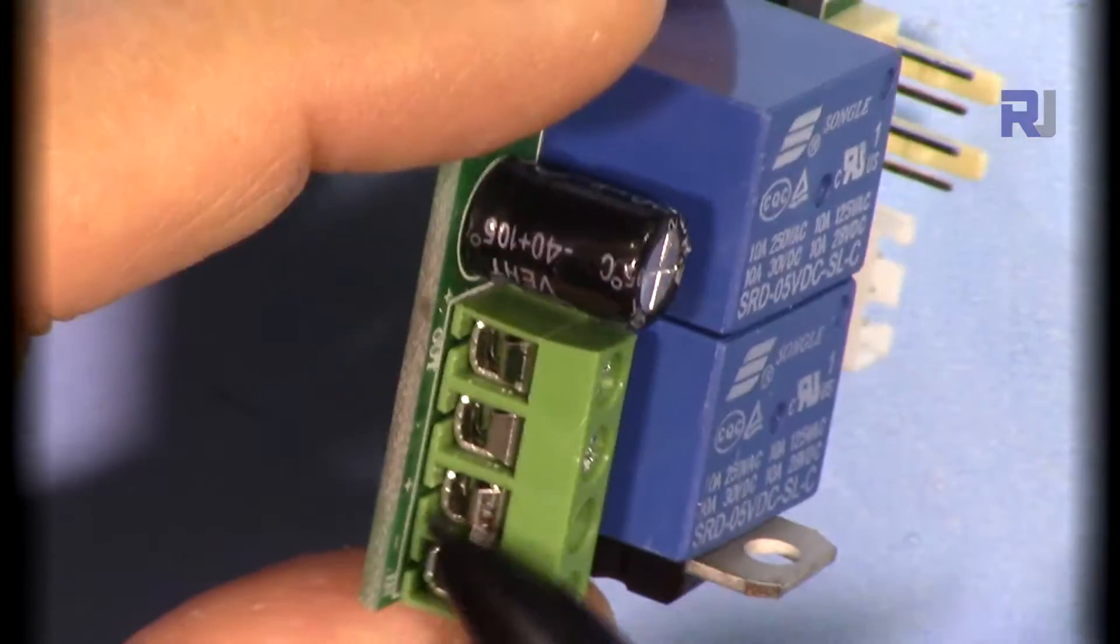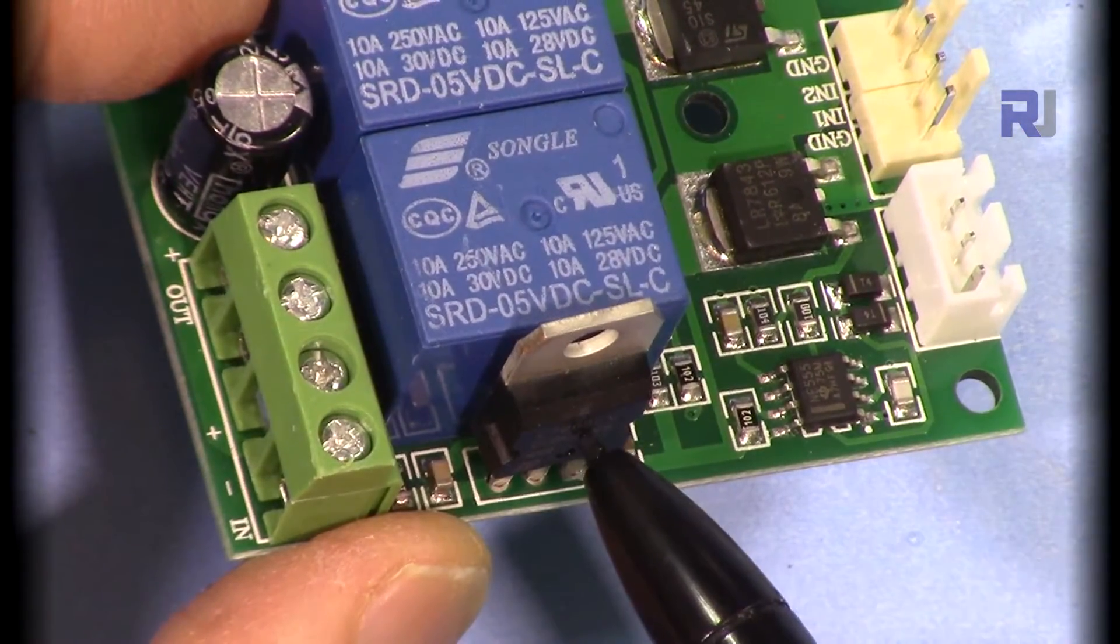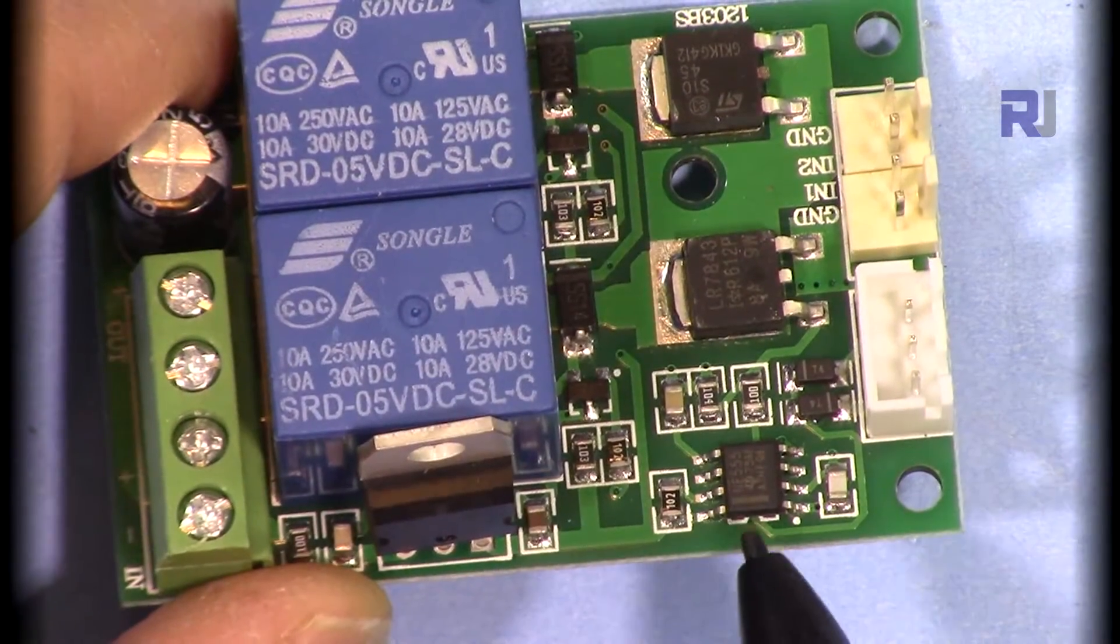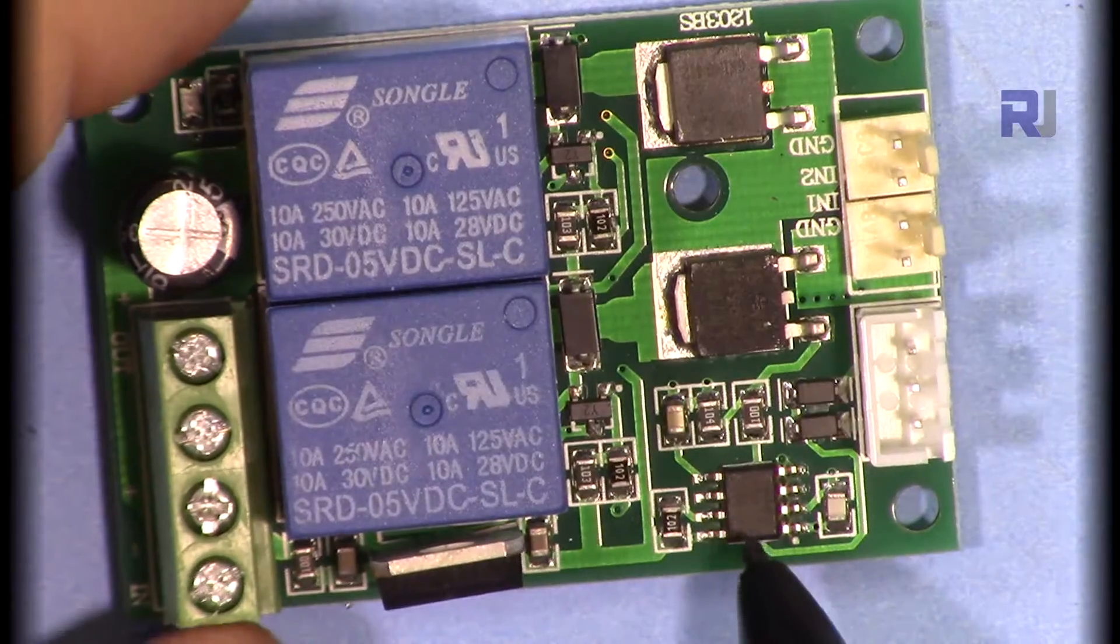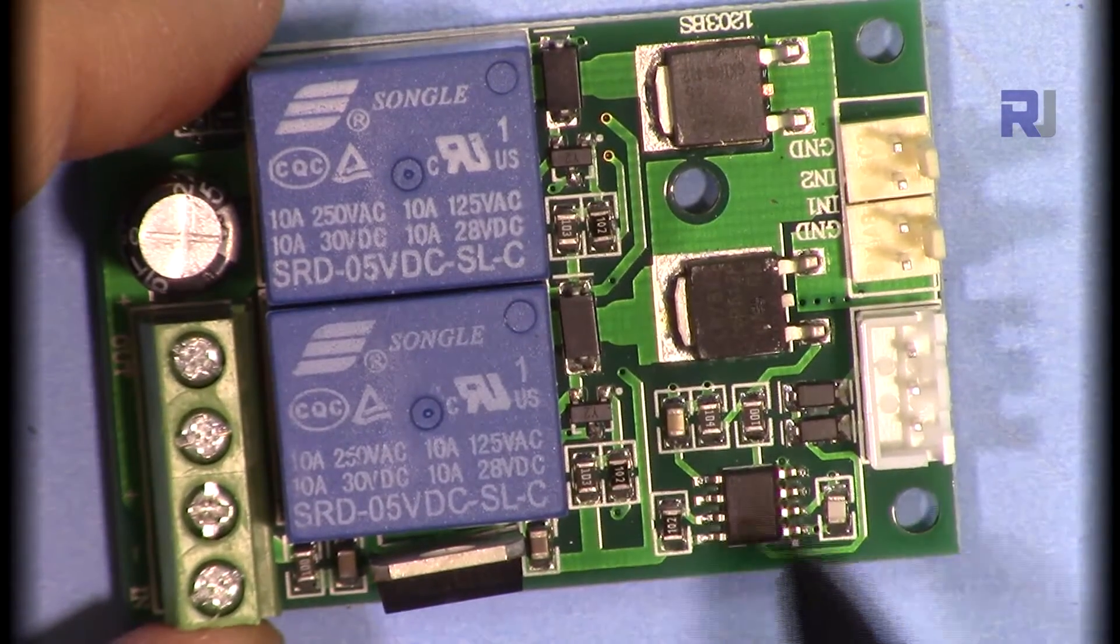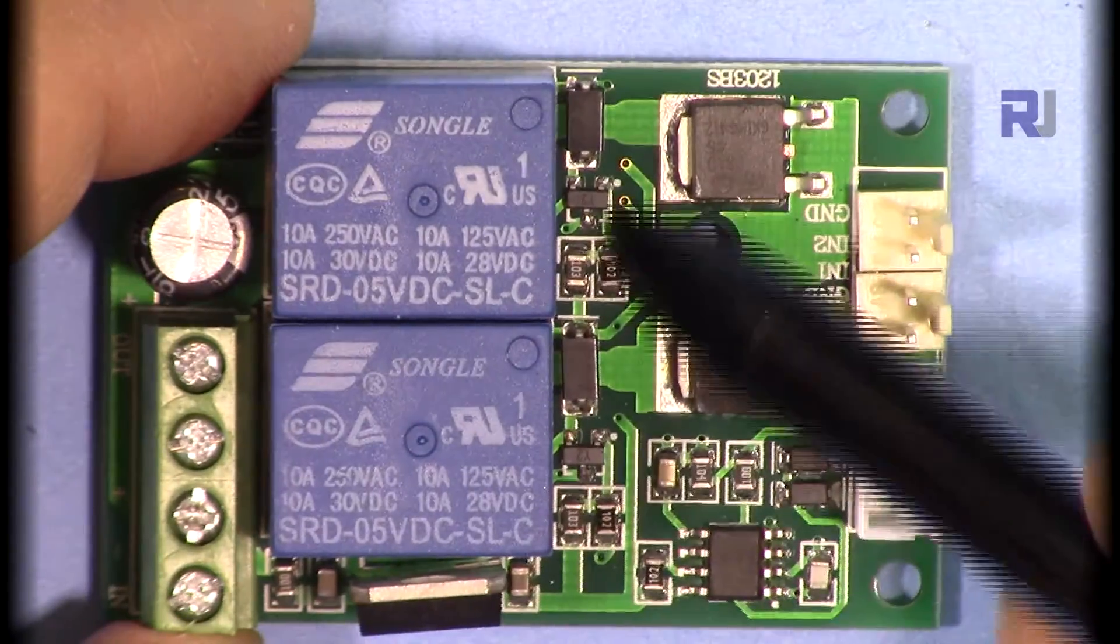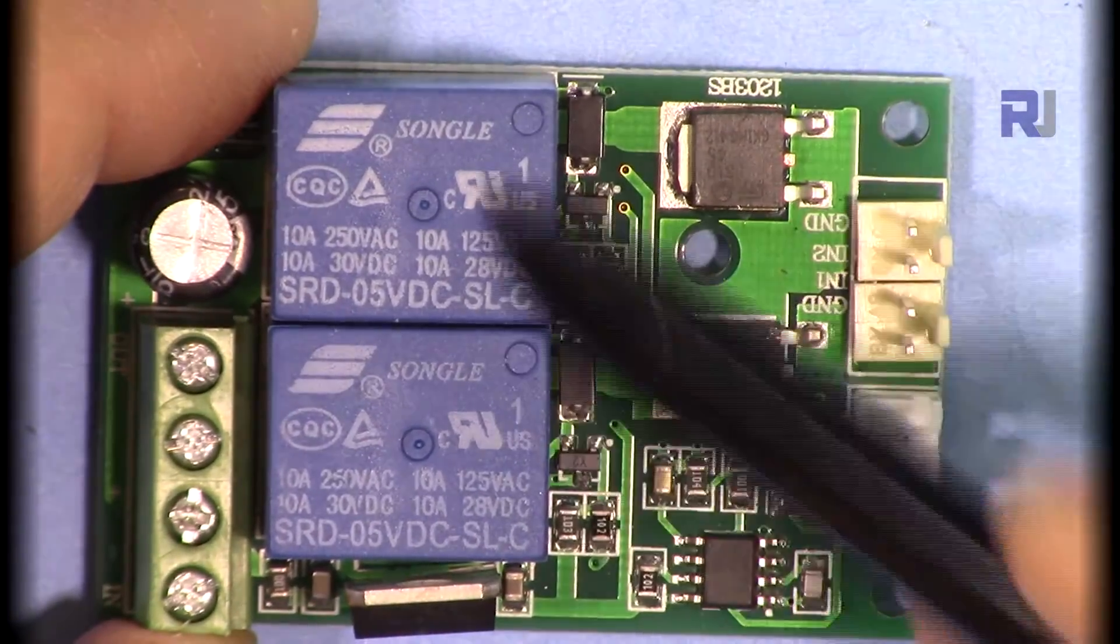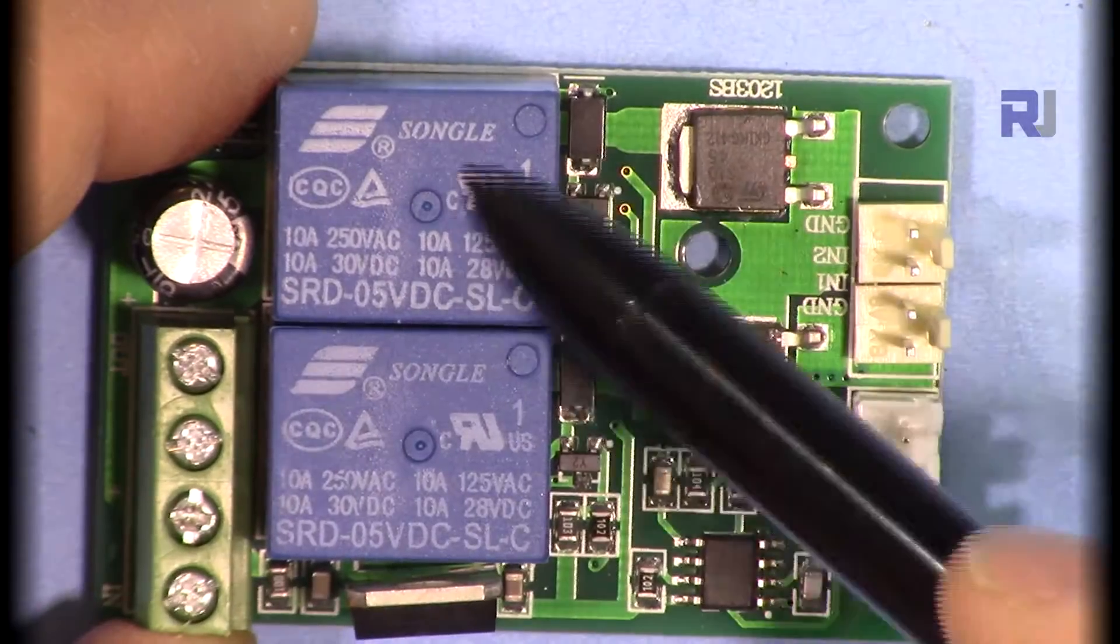When the voltage comes here it's being regulated to 5 volts to supply voltage to this 555 timer. This is a famous timer chip that has been used here as a pulse width modulation. From here we have these two tiny transistors that are driving these two relays with these diodes for protection of the transistor.